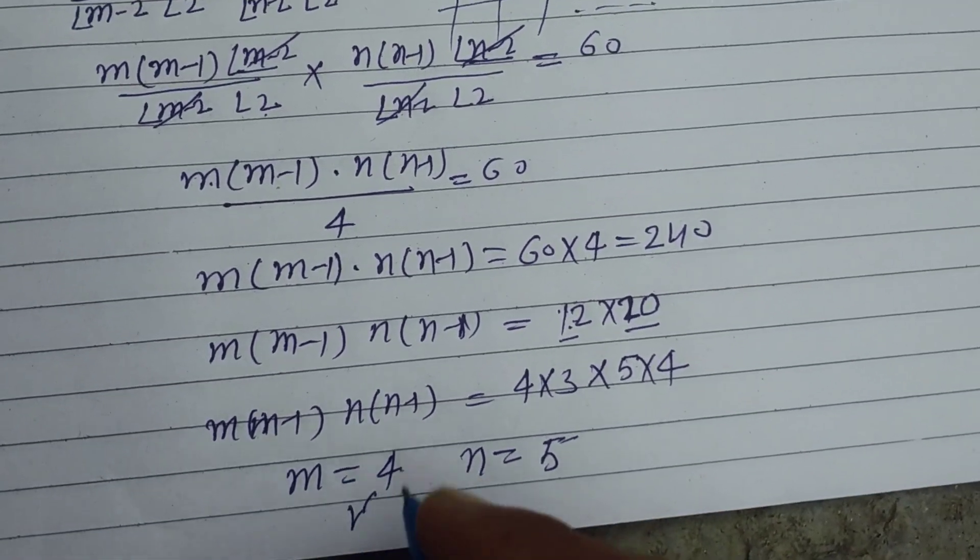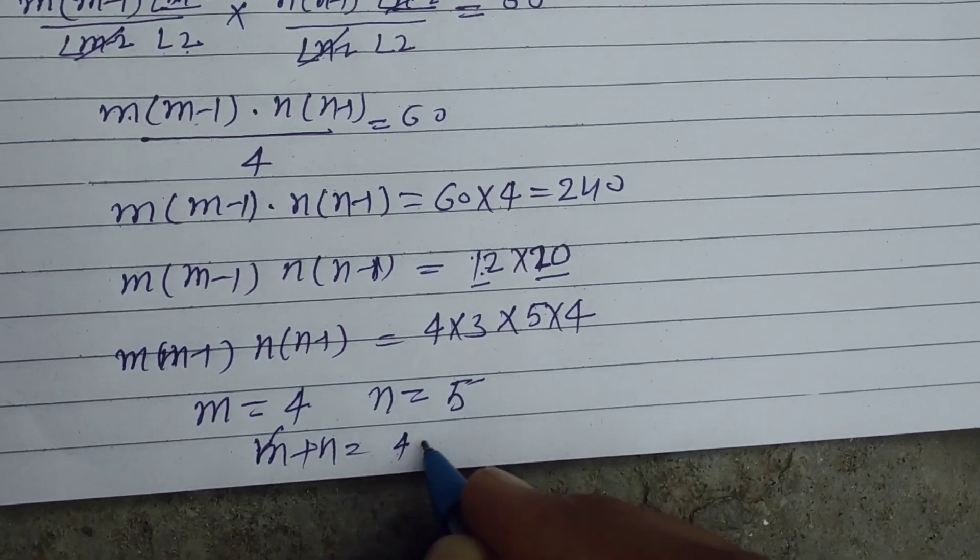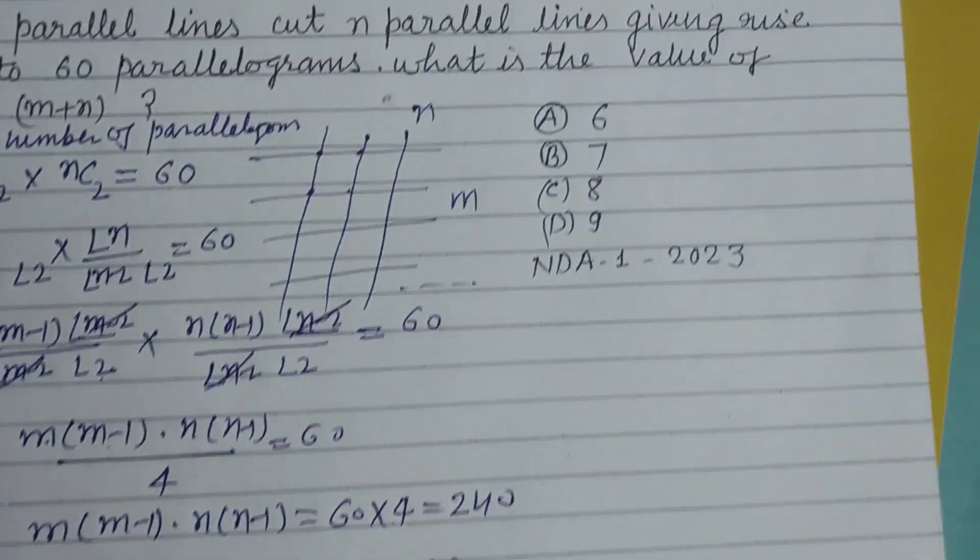Therefore, m plus n equal to 4 plus 5, this is 9. So 9 will be the answer of this question, which is found in option D.